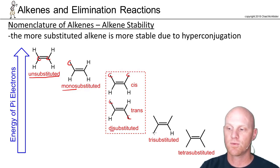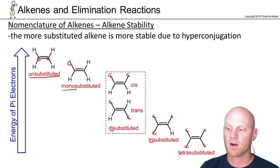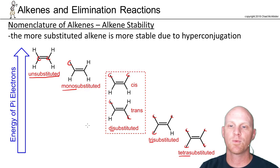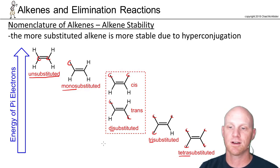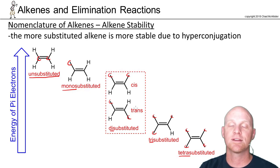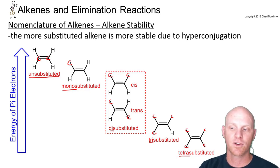If three out of those four positions are carbons, we'll call that trisubstituted. And if all four of the groups attached to those two sp2 carbons are carbon chains, we'll call it tetrasubstituted. So it turns out the more substituted, the more stable, and that's why I've got them going to lower energy here. If you also look between cis and trans, trans is more stable than cis, and that's purely a steric thing — your large bulky carbon chains are farther apart.